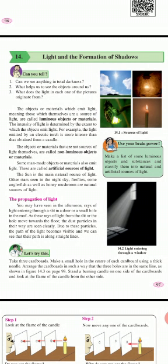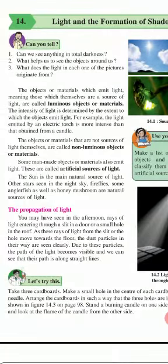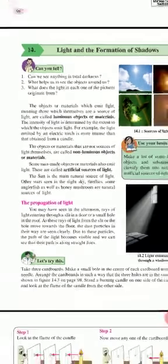The intensity of light is determined by the extent to which an object emits light. For example, the light emitted by an electric torch is more intense than the light obtained from a candle.